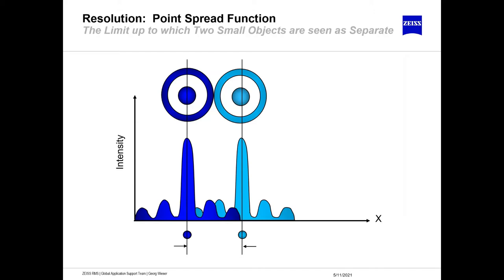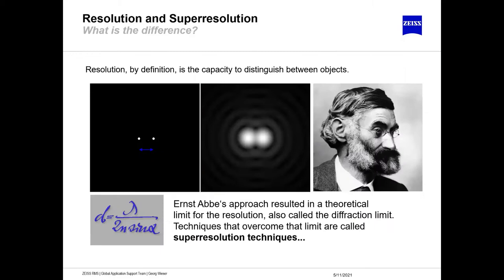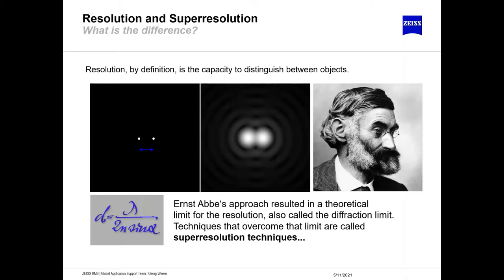This limit imposed by the diffraction of light was described by Ernst Abbe, and the formula is carved in stone on the Ernst Abbe monument in Jena. This limit describes that objects closer together than roughly 240 nanometers in X and Y, and 600 nanometers in Z, cannot be resolved. This distance is defined by the wavelength of the light and the numerical aperture of the objective lens. Techniques that overcome this limit are called super resolution techniques.